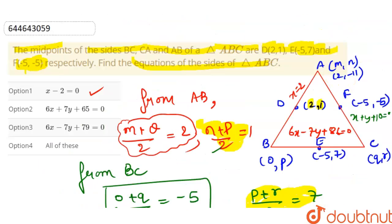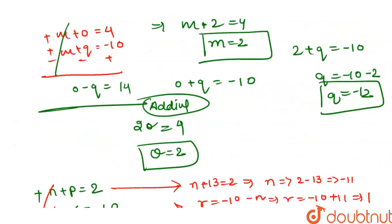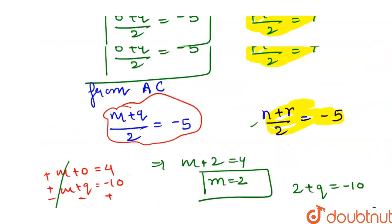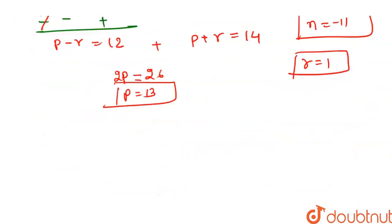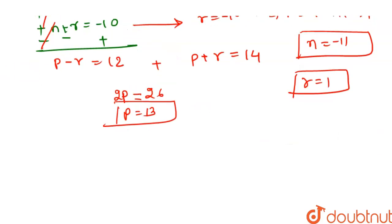So the coordinates of the vertices are: A = (m,n) = (2,-11), B = (o,p) = (2,13), and C = (q,r) = (-12,1). We can verify: midpoint of AB = ((2+2)/2, (-11+13)/2) = (2,1) ✓; midpoint of BC = ((2-12)/2, (13+1)/2) = (-5,7) ✓; midpoint of AC = ((2-12)/2, (-11+1)/2) = (-5,-5) ✓. All coordinates are correct.